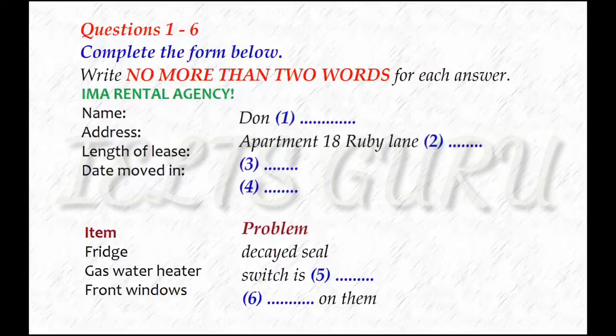Good morning. I'm a rental agency. How can I help? Hello. I'm ringing about some problems I'm having with my apartment. Yes, of course. If I can just get a few details first. What's your name? Don Chester. How do you spell that? C-H-E-S-T-E-R. Okay. And the address? Apartment 4, 18 Ruby Lane.